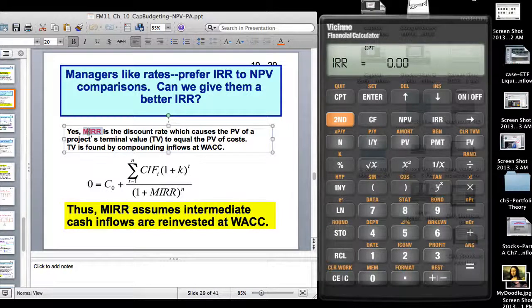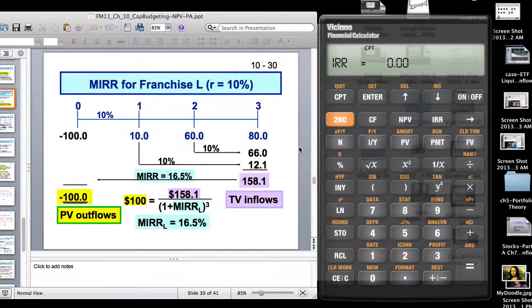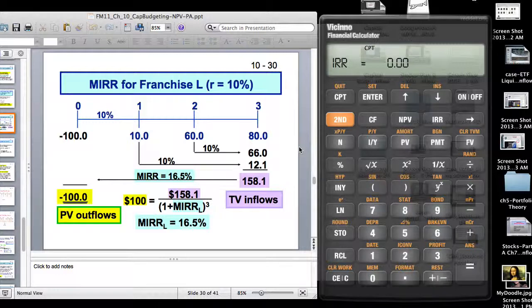You'll be asked to calculate it. It's no big deal. Looks busy, but it's not. It's very intuitive. You will like it actually. It's the discount rate which causes the present value of a project's terminal value, new term, terminal value, to equal the present value of cost. And terminal value is found by compounding inflows at the weighted average cost of capital. The MIRR assumes that intermediate cash flows are reinvested at the WAC. Here's a formula here, but it will become clearer when I go through this example.